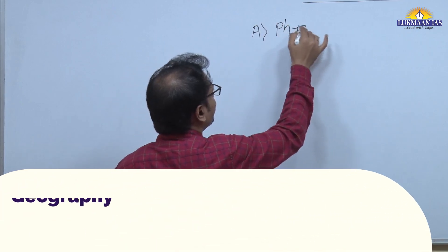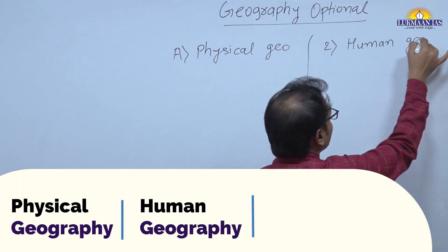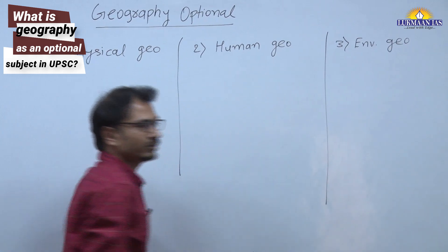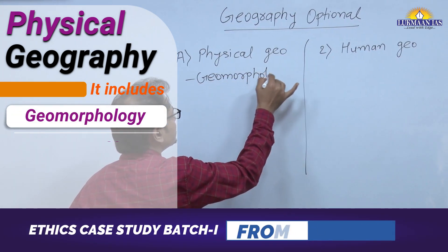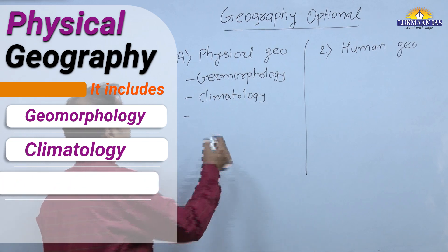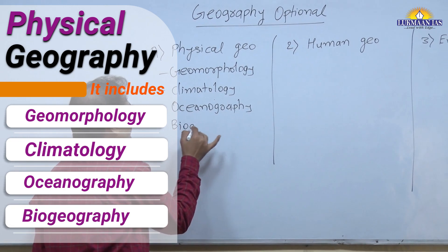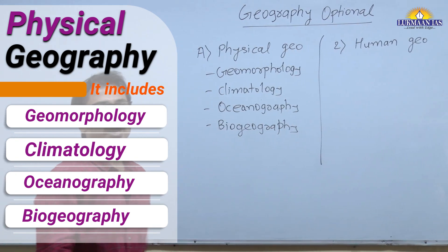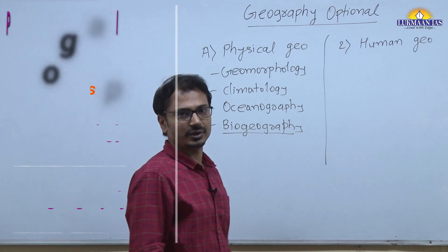There are three main branches of geography: physical geography, human geography, and environmental geography. Physical geography includes geomorphology — the study of landforms — climatology, which is the study of weather and climate, oceanography — the study of oceans — and biogeography, which covers forests, animals, plants, biomes, social forestry, and agroforestry.